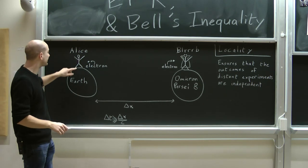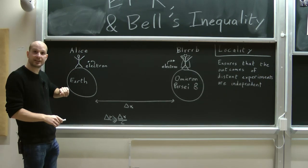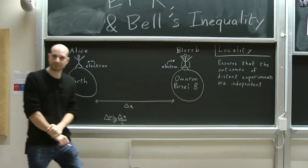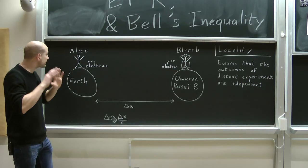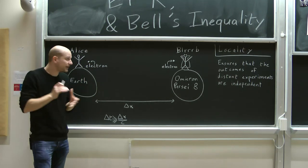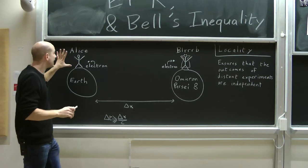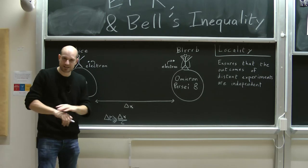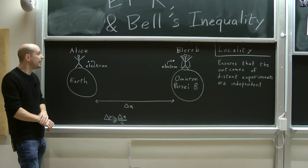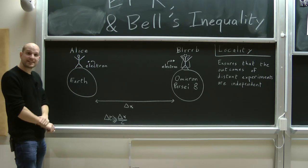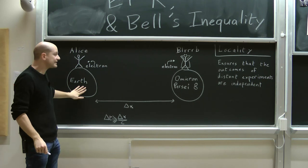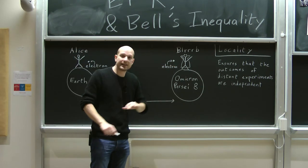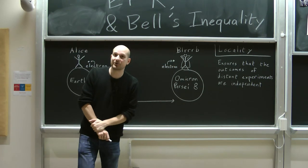Each scientist has an object that they can do experiments on. In this example, the object will be an electron. So Alice has an electron and Blurb has an electron. What's important from the point of view of locality is that Alice and Blurb may be as far away as possible from each other. So let's assume that Alice is on Earth, whereas Blurb is on a distant planet called Omicron Persei 8.